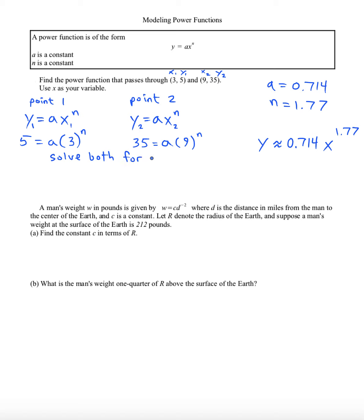I'll solve both for a. That'll give me a equals five over three to the n, and if I divide over here we'll get a equals 35 over nine to the n. As I've done in the past, whenever I solve an equation for a variable and solve the other equation for that same variable, we can now set the results equal to each other. It's a really useful algebraic technique.